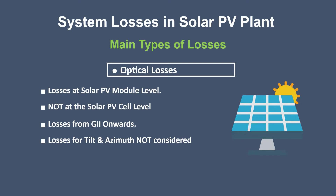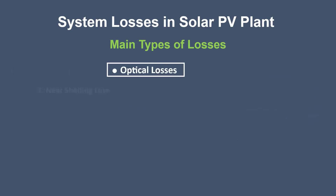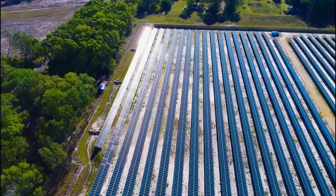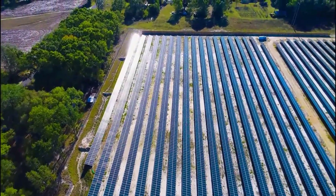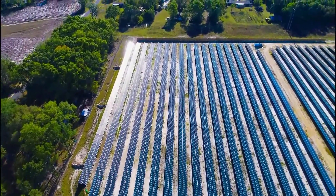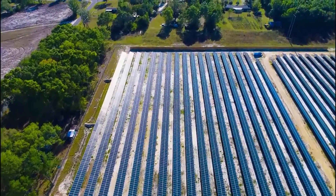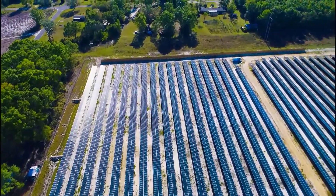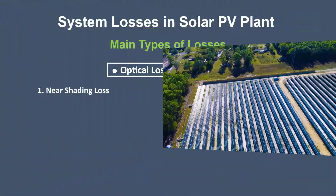Okay, lots of discussion already — let's come to the main subject now. In optical losses, first we should talk about near shading loss. As the term suggests, this type of loss occurs because of shadows on solar panels from objects that are near to it. This may happen because of two main reasons.